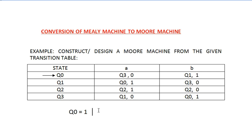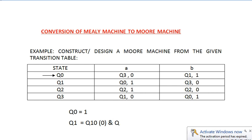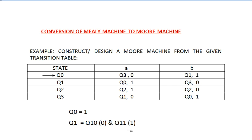Moving to Q1 — looking into Q1 in the table, Q1 is having two corresponding outputs: one is 0 and the other one is 1. In this scenario you have to divide Q1 into two parts: Q1_0, which will correspond to output 0, and Q1_1, which will correspond to output 1. This is just a representation — you can write it in words or any notation.